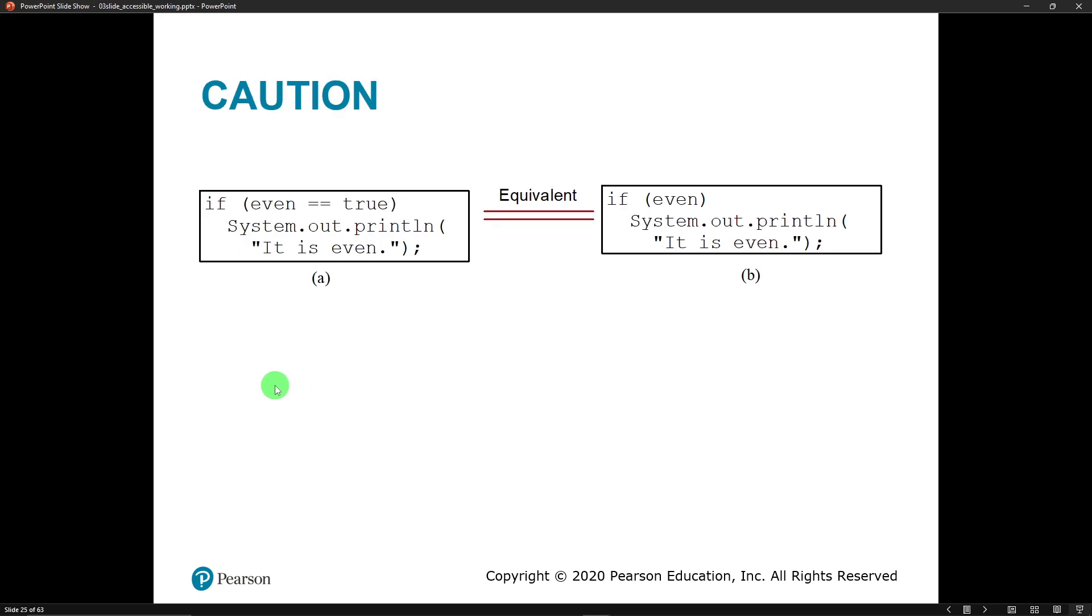And then a caution. I like to call this a noob bear - this is for newbie programmers. You can always tell a noob, and I don't say that derogatorily, it's just a funny way to say it. It's kind of a running joke in a lot of my classes. If even equal equal true - remember inside this if statement, inside the parentheses, there needs to be a boolean expression. This is perfectly valid, we can take even which is a boolean, it's either true or false, and test to see if it's true or false.